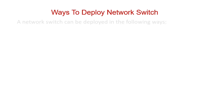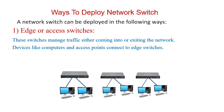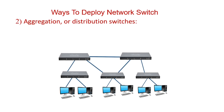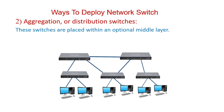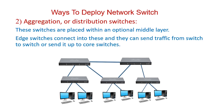Let's now see the ways we can use a network switch. First, we can use a switch as an edge or access switch. These switches manage traffic either coming into or exiting the network, and devices like computers and access points connect to them. Second, we can use a switch as an aggregation or distribution switch. These switches are placed within an optional middle layer, and edge switches connect into these — they can send traffic from switch to switch or send it up to core switches.